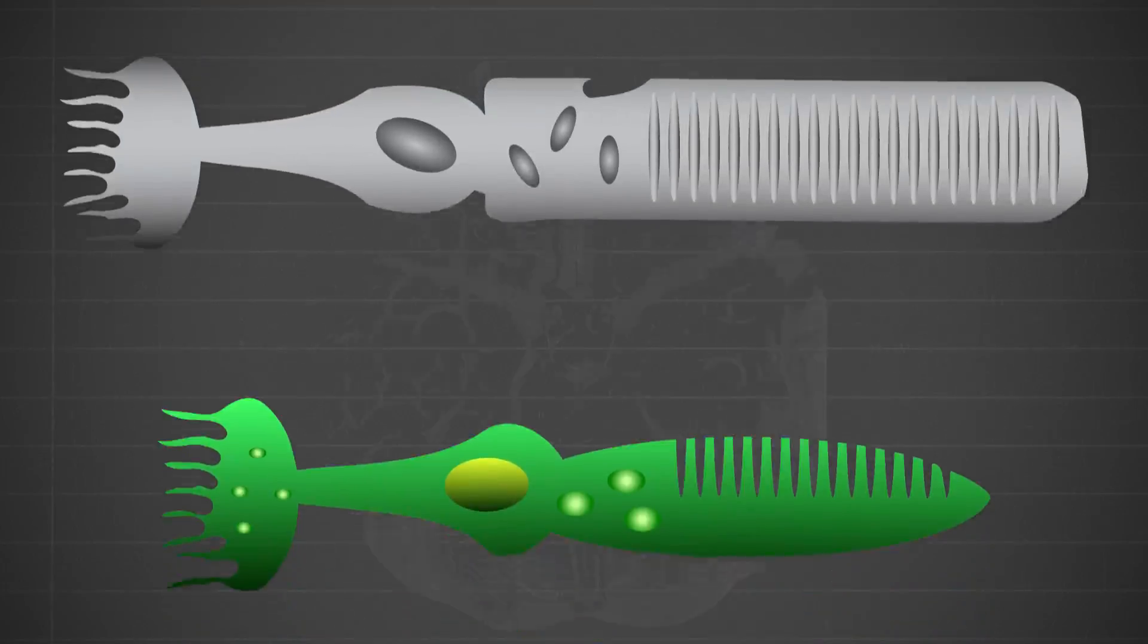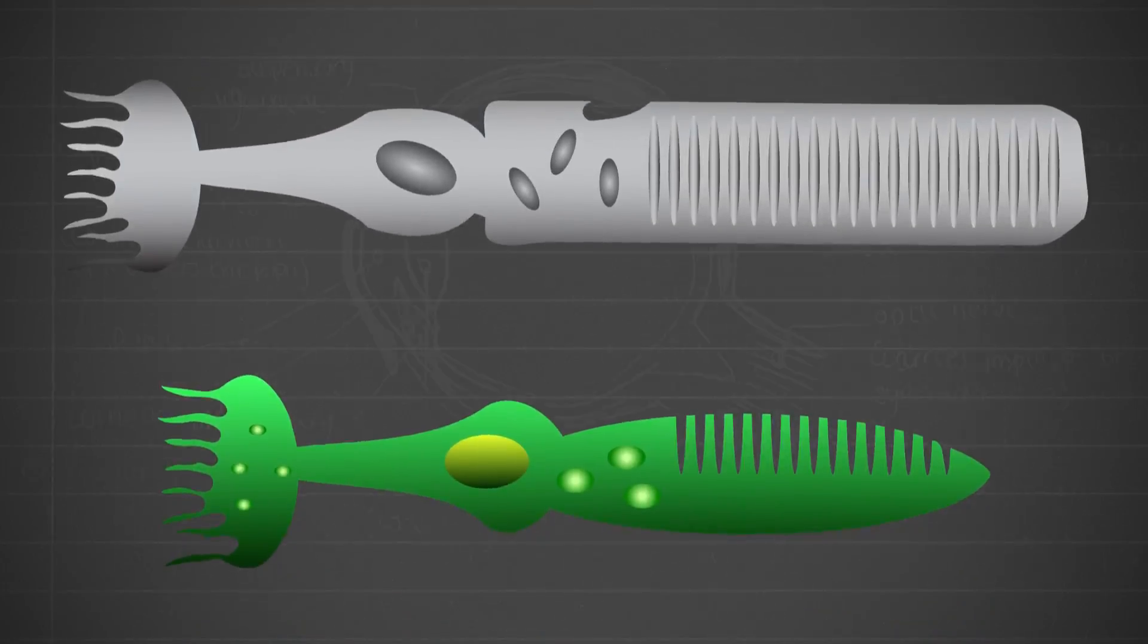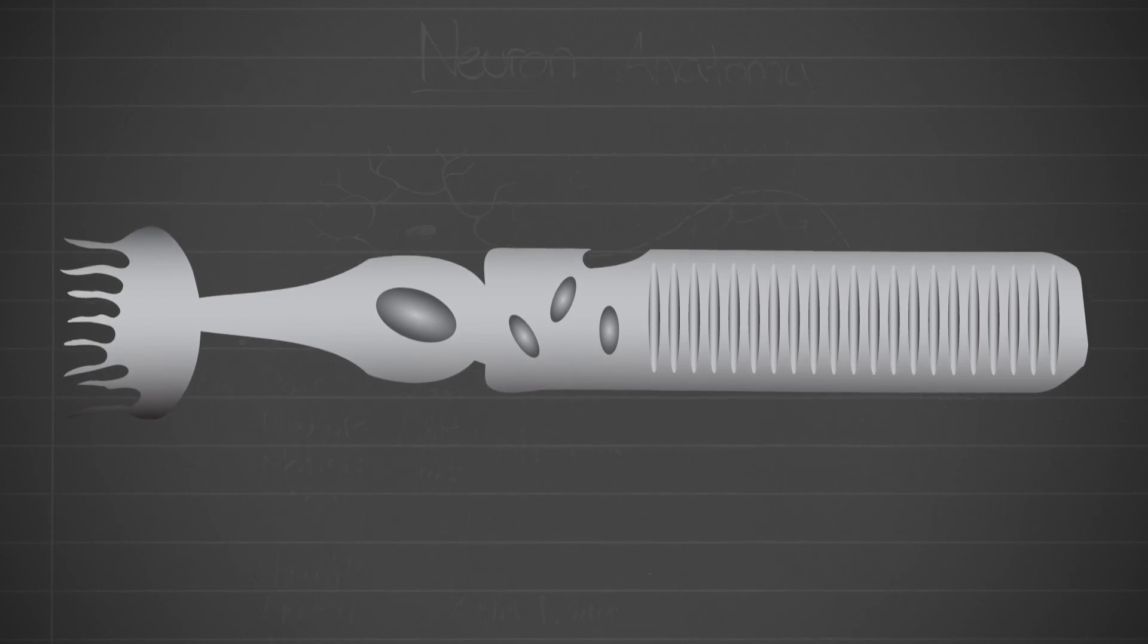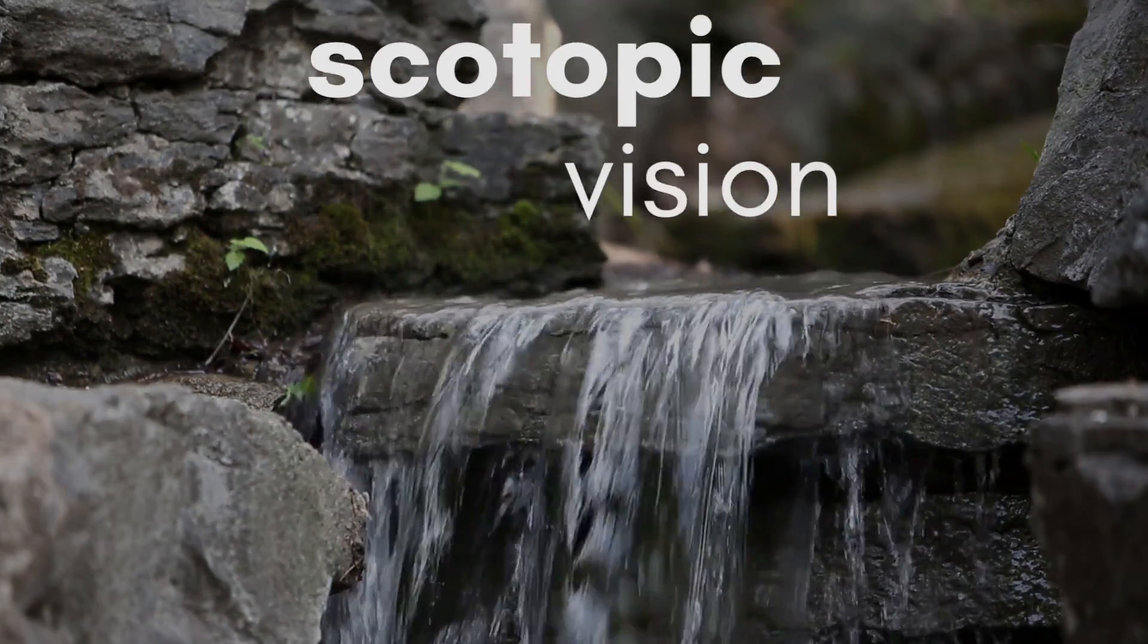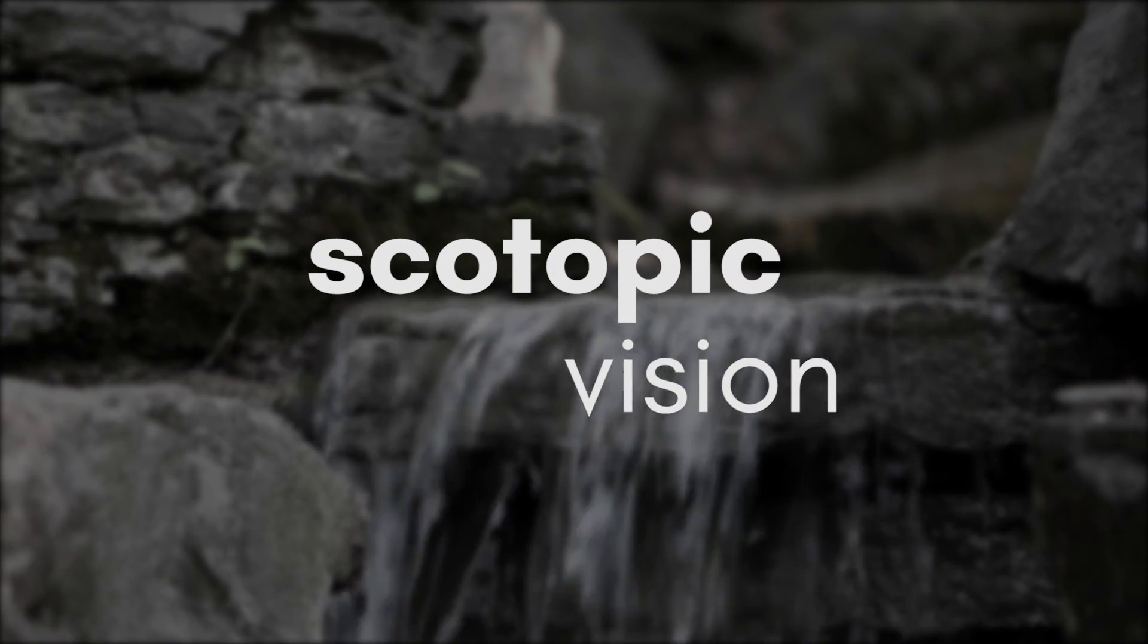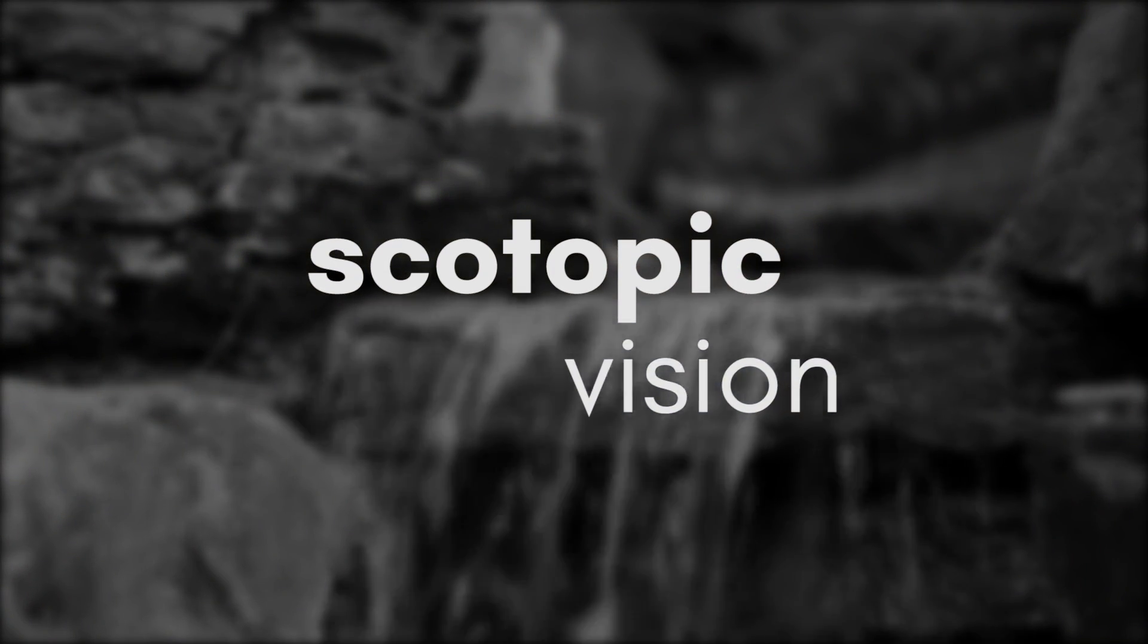The photoreceptors in the human retina come in two flavors, rods and cones. Rods are responsible for vision at low light levels. This is called scotopic vision. They lack spatial accuracy or the ability to mediate color and they exist primarily around the outer edges of the retina, forming a large part of our peripheral vision.